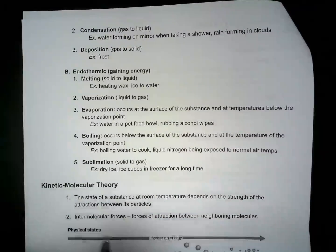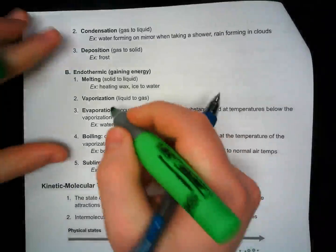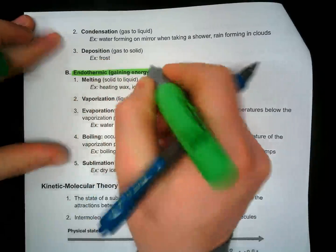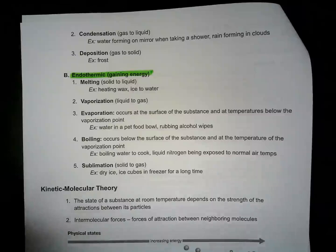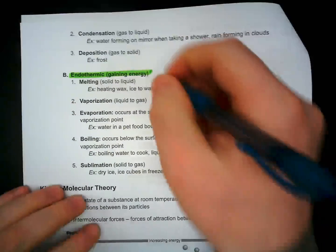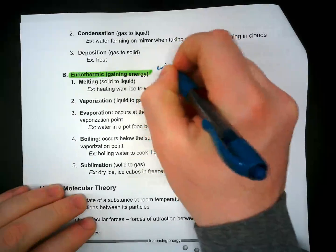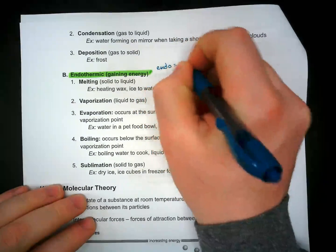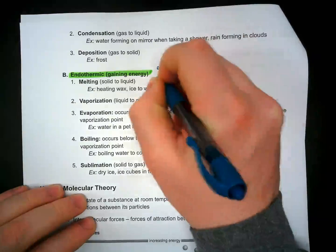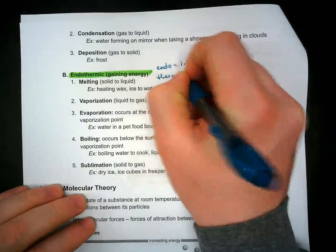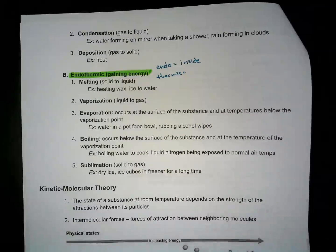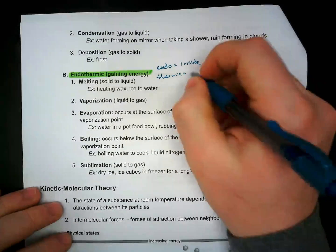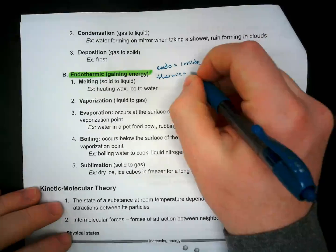The second kind of reaction is called endothermic. Endothermic reactions mean you're gaining energy. Endo is the opposite of exo — endo means inside. Thermic again means energy. So we're gaining energy, we're keeping energy inside.